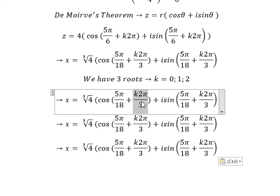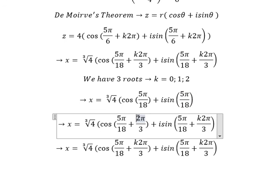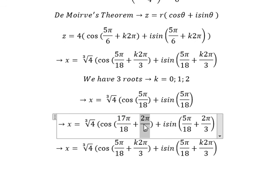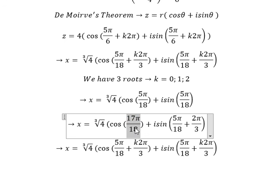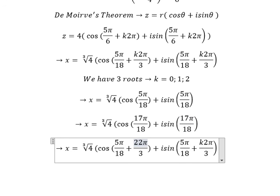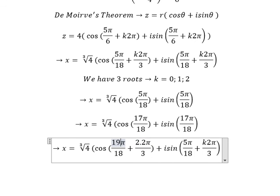When k equals 0, this one goes to 5 pi over 18. When k equals number 1, two values sum together and we will get about 17 pi over 18. And the last one, k equal to number 2, we will get about 29 pi over 18.